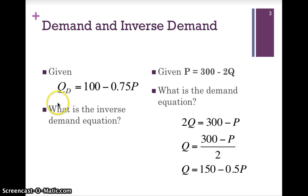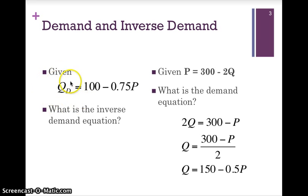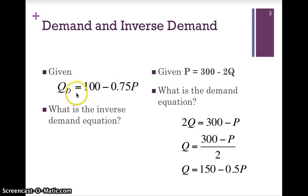Suppose we are given QD equals 100 minus 0.75P. Here Q is the subject of the formula — Q is the dependent variable, depending on what happens to P. Once again we see a negative relationship: as price rises, quantity will fall. We can change this into an inverse demand function by making price the subject of the formula.